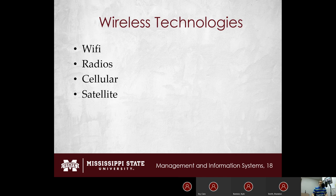Radios are devices that transmit and/or receive signals wirelessly — a Wi-Fi antenna is technically a radio. There are many types: traditional AM/FM spectrum, ham radios for long-distance communication, and more. Cellular technology is widely used — virtually everyone in this class likely has a cell phone — enabling voice calls, text messages, and full internet access. Satellite technology will also be covered briefly.